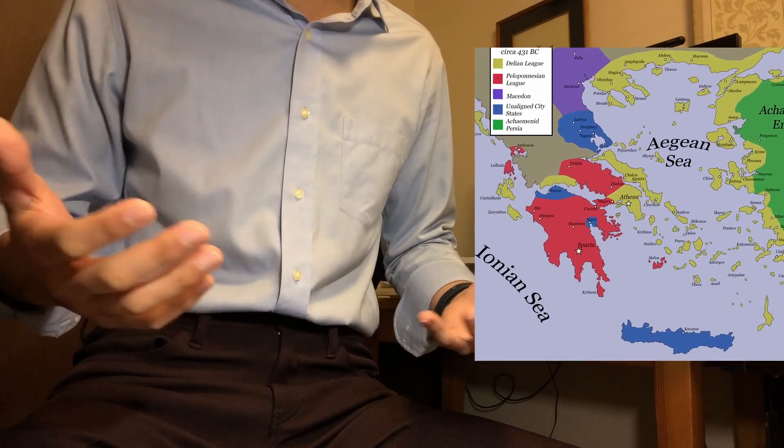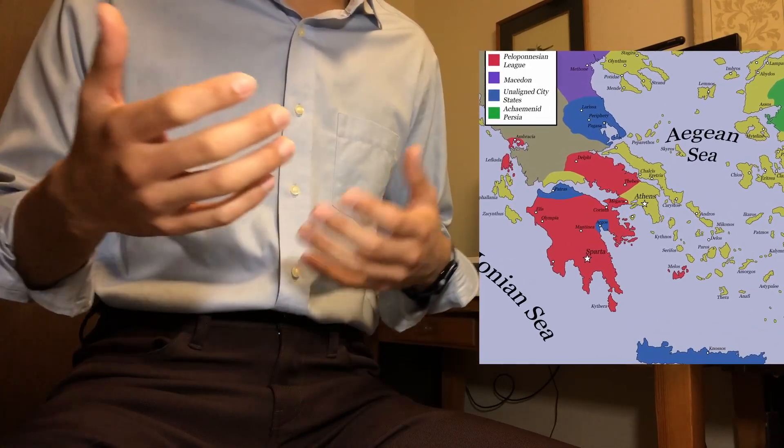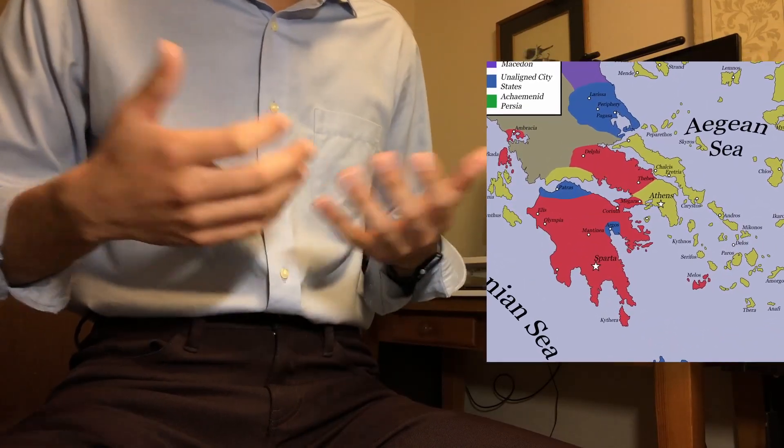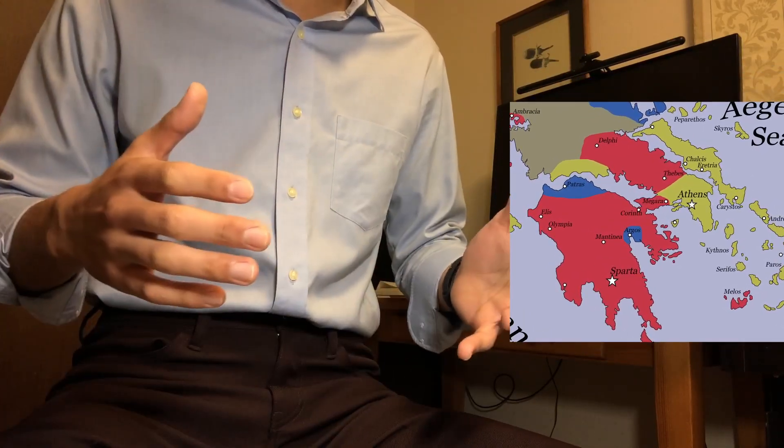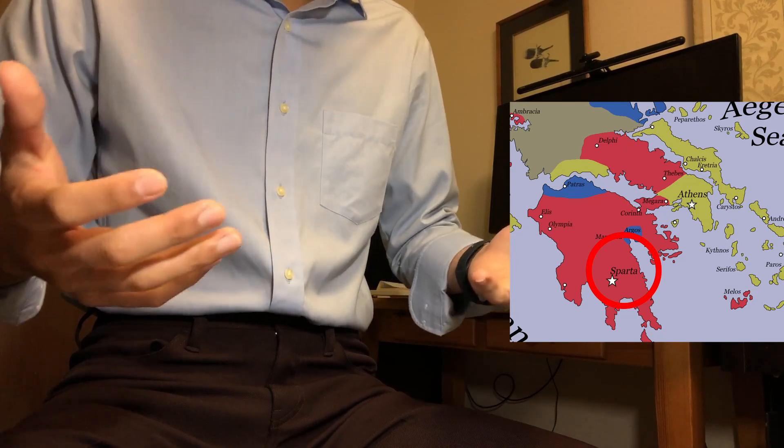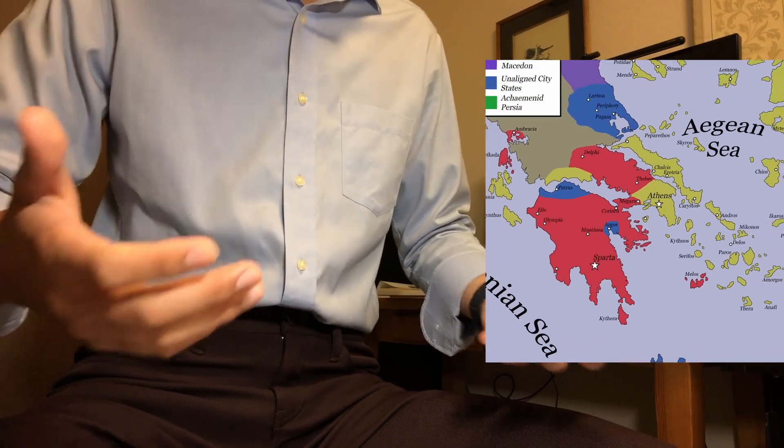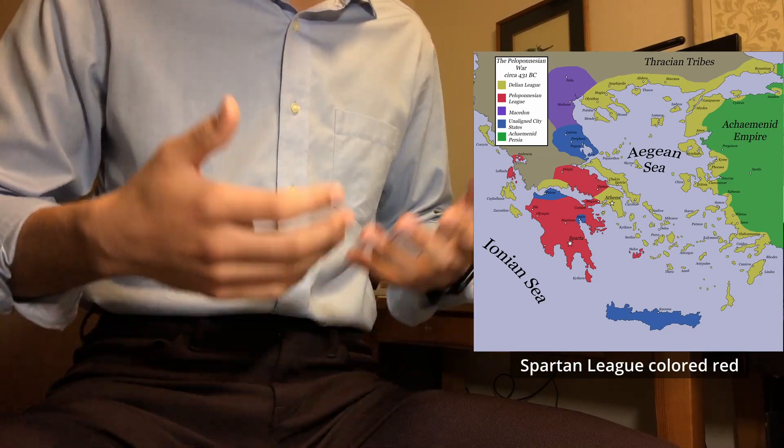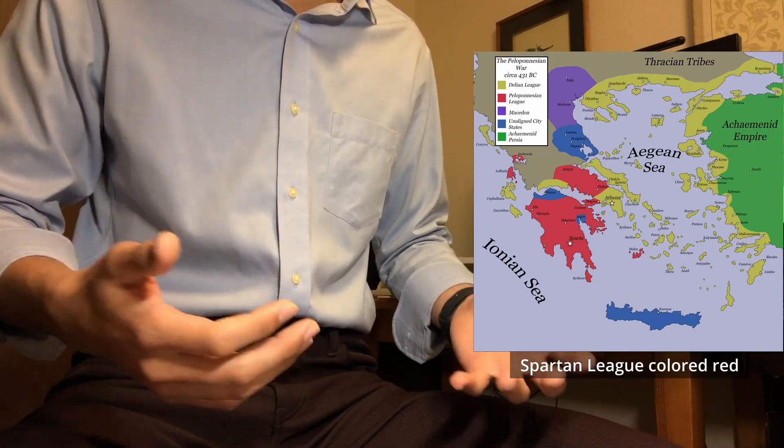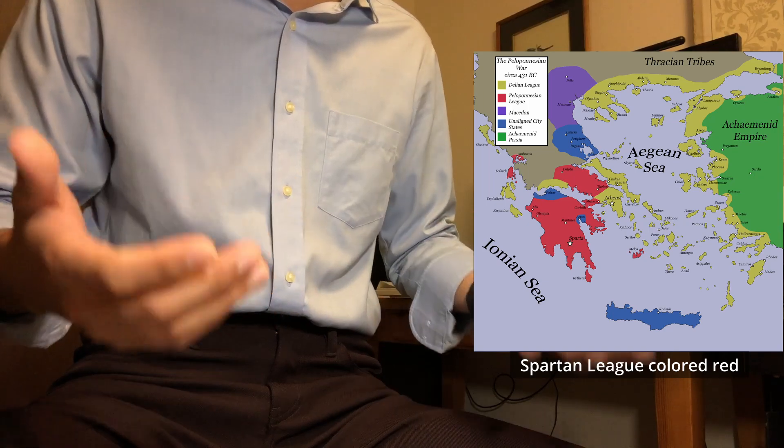Unsurprisingly, many cities were unhappy with the exploitation, so some cities tried to go against Athens, and one of them was Sparta. Sparta formed the Spartan League and led the war against Athens in 460 and also in 431, which is called the Peloponnesian War.